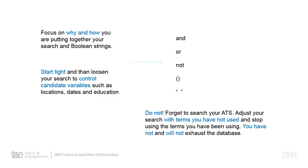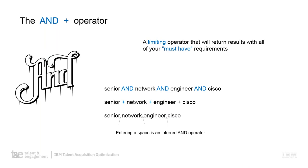We're going to focus on the why and the how. When you look at Boolean search, remember it is a mathematical formula. The AND is a plus. The OR is a way to fluctuate between areas. The NOT would be a minus in loose terms. Very easy to put together — very basic search terms. And as we go along, we'll get a little bit more complex.